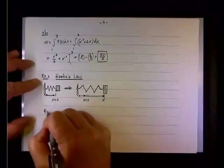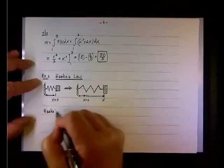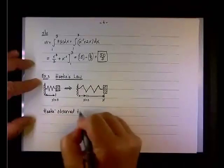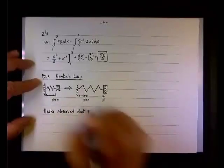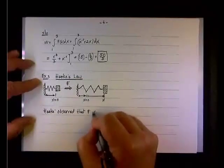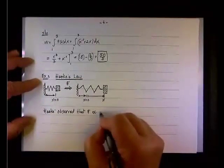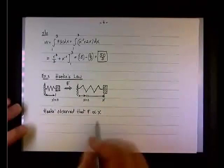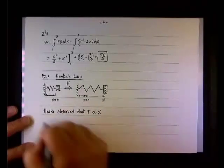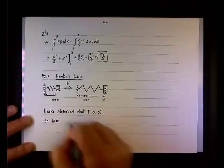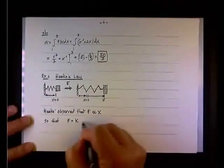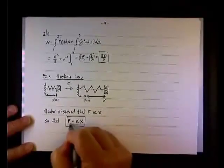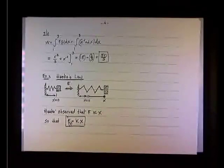so X is the amount we stretch it, and Hooke observed that F, the force, so we apply force here, is proportional to the distance X. Okay, in other words, the more we stretch, the bigger the force, and he said that there is a linear relation between the force and the distance, so that F is really equal to some constant K times the distance X.